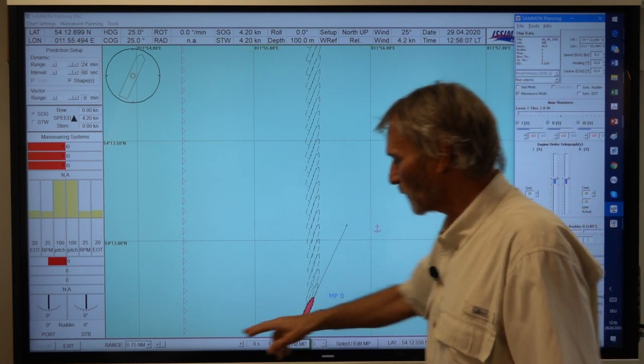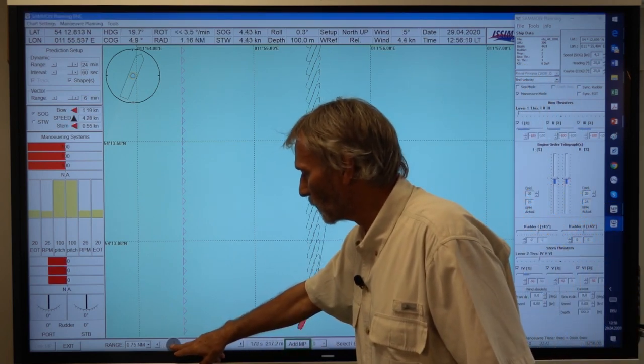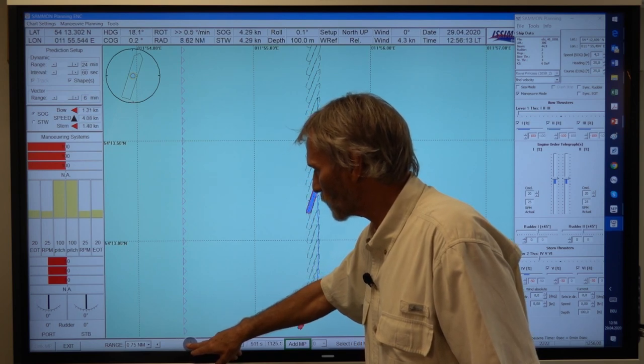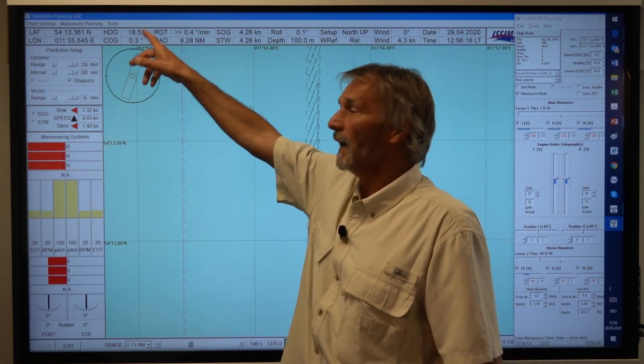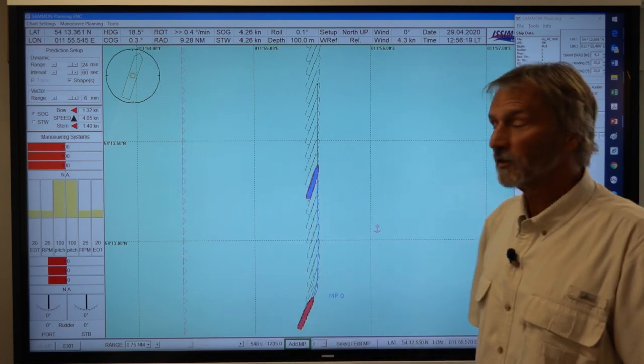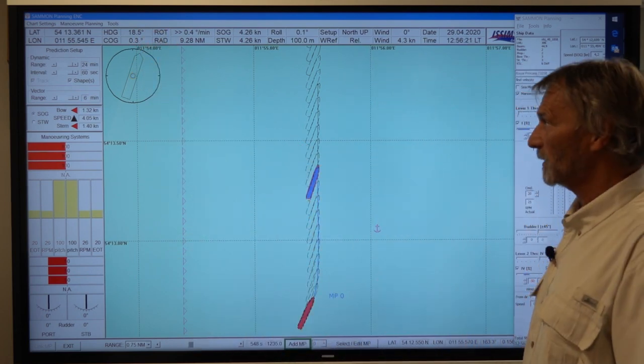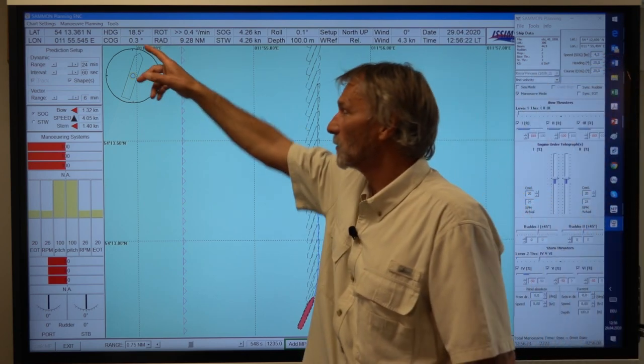So if you want to see what the drift angle is we move the ship into this position here. We see the difference is about 19 degree drift angle. The difference between heading and course over the ground.